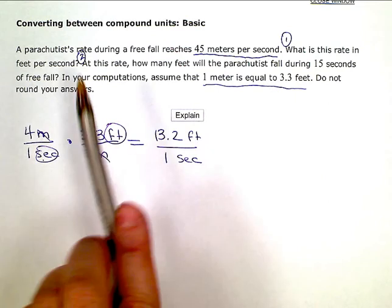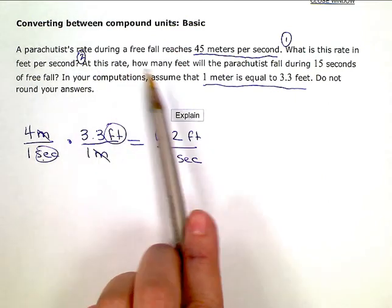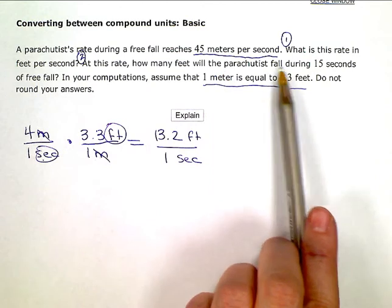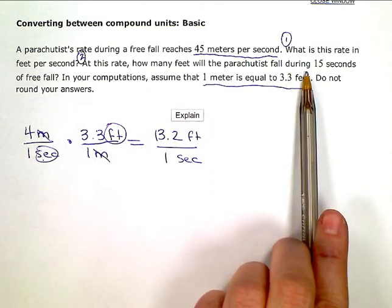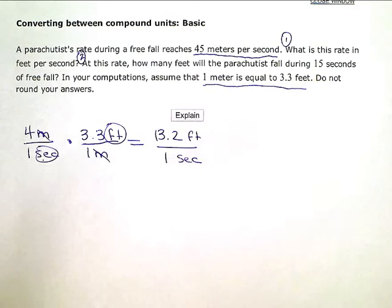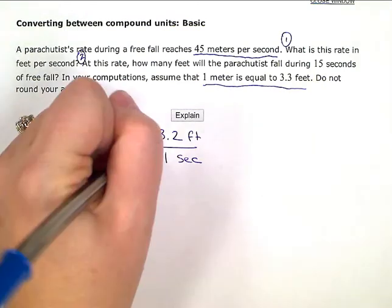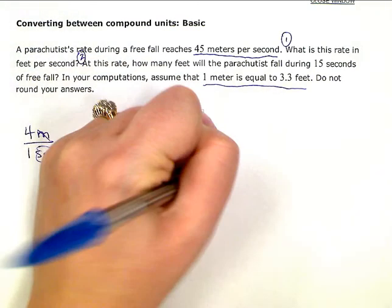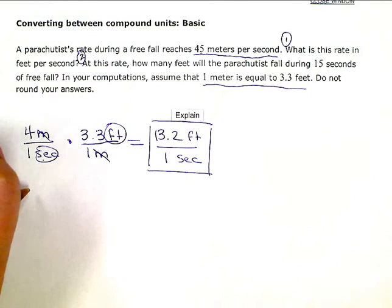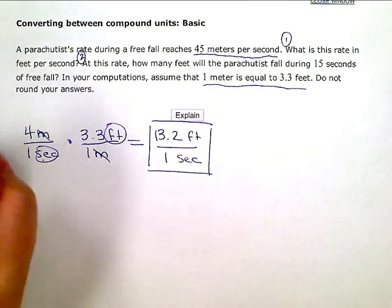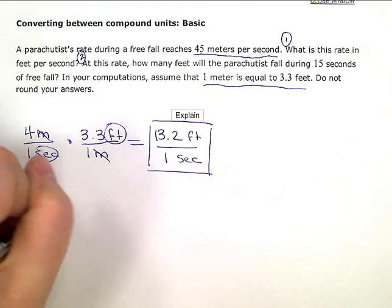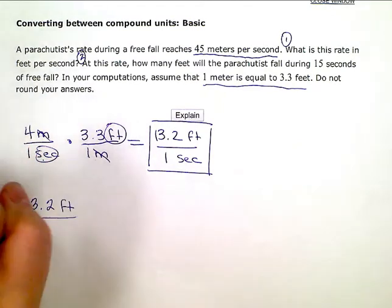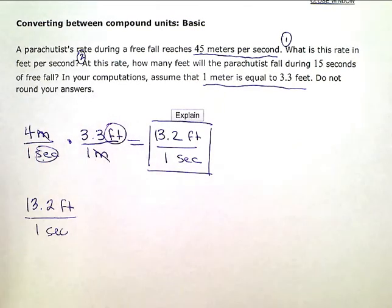Now question number two, at this rate, how many feet will the parachutist fall during 15 seconds of free fall? So I'm going to use this new rate, my answer to the first question, for another calculation. So 13.2 feet every second, every one second.